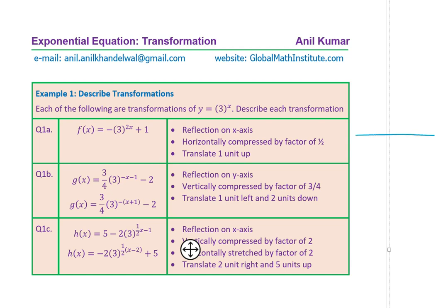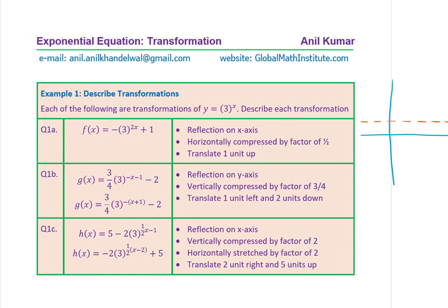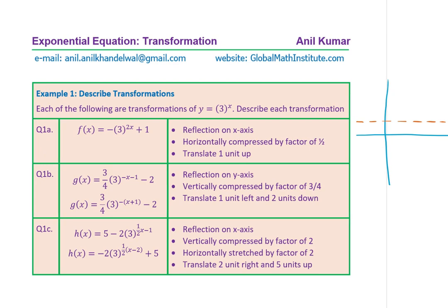If I'm sketching the graph of this particular function, plus 1 means a horizontal asymptote at y equals 1. The minus means the function gets reflected, so instead of going upwards it will now go downwards. I could sketch this function going downward from the asymptote at 1.